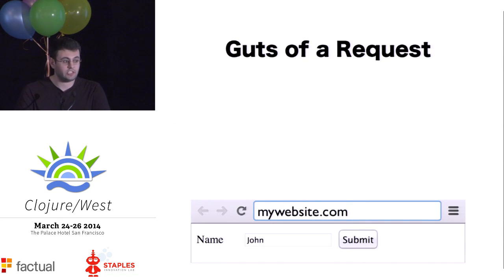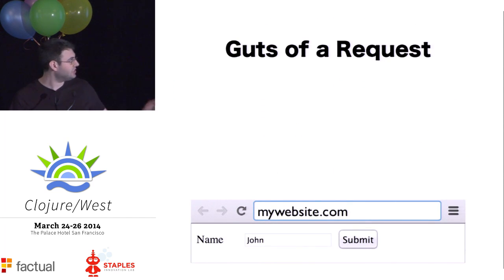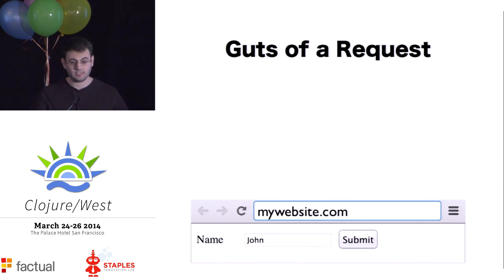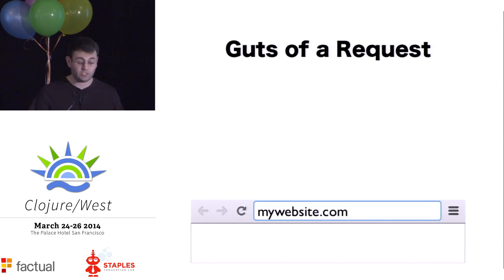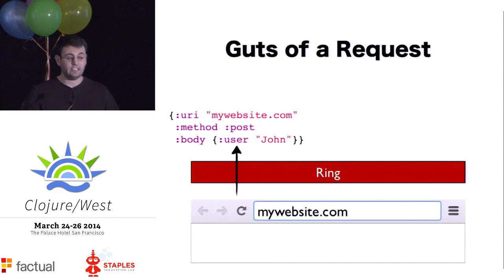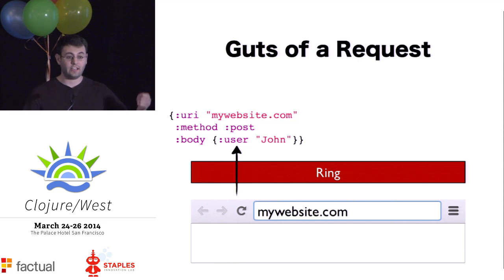Let's get started with an example just to make sure we're all on the same page. This is my website. A user comes to my website and fills out this form. The user types in their name and pushes submit, and that gets sent off up to the server. On the server, ring intercepts this request and converts it into a map that looks like this, where there are keywords as keys in the map.